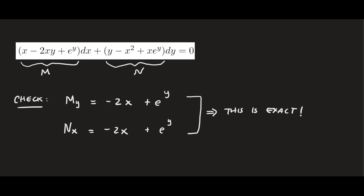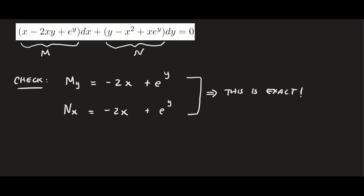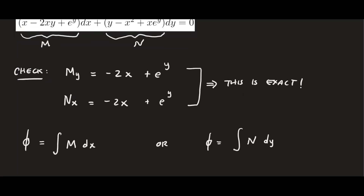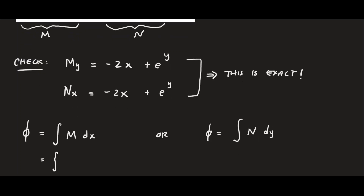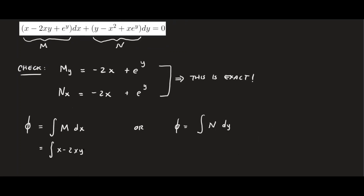Now that we've confirmed it is exact, let's proceed to the method. We're looking for a function φ that solves this differential equation. There are two ways to find it: you can integrate M with respect to x, or integrate N with respect to y. I'm going to pick M. So we integrate M — which is x minus 2xy plus e^y — with respect to x.